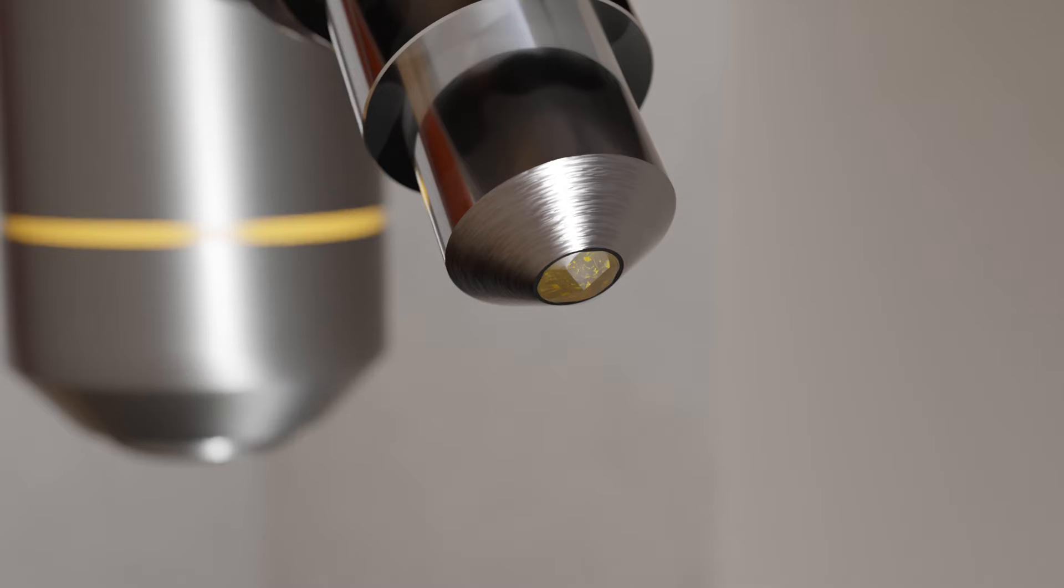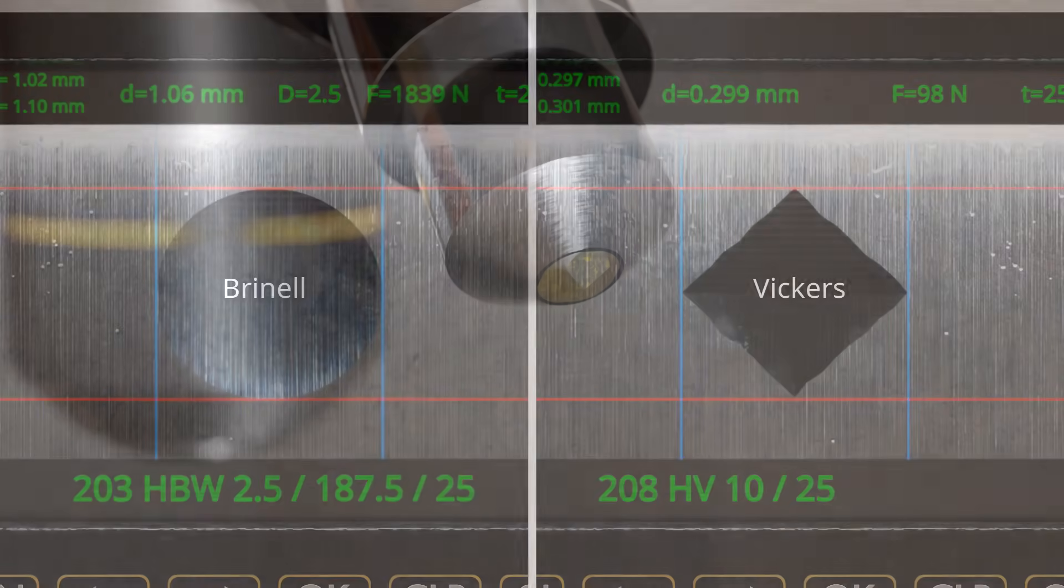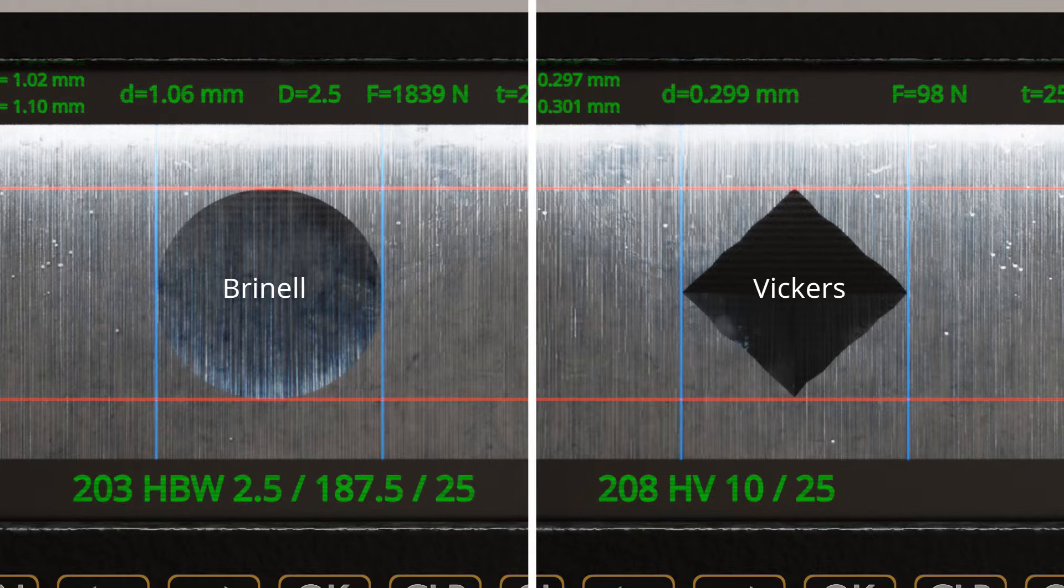This method uses a four-sided pointed diamond pyramid as the indenter. In both the Brunel and Vickers hardness test methods, hardness is determined by the ratio of the test force to the surface area of the indentation. In both cases, the indentation is evaluated using a microscope, making automated hardness testing impractical with these methods.